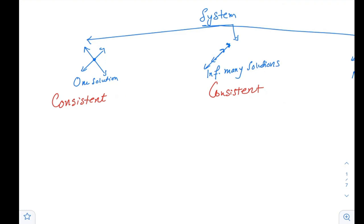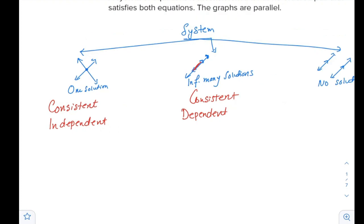The system is consistent if there is any solution. If you have one solution, then we call it independent. Each line is independent. It's not depending on the other one. While here, they are depending on each other, so we will say they are dependent. So here, consistent and dependent.